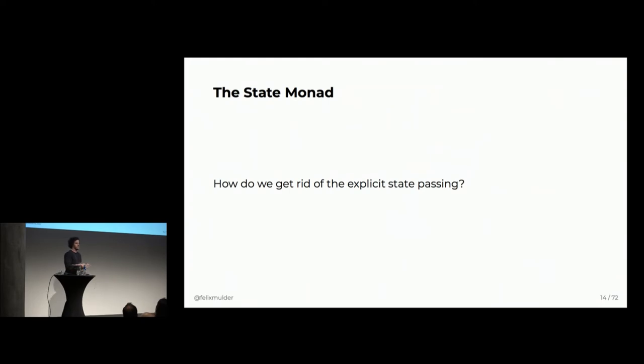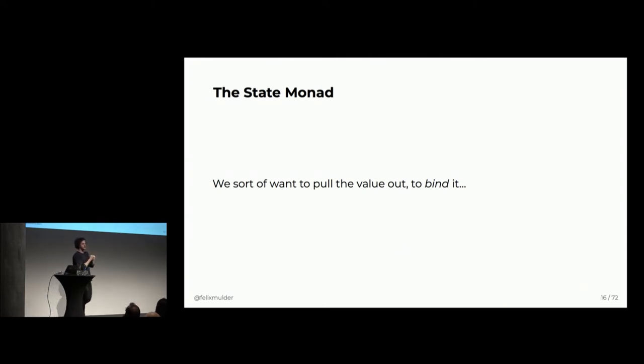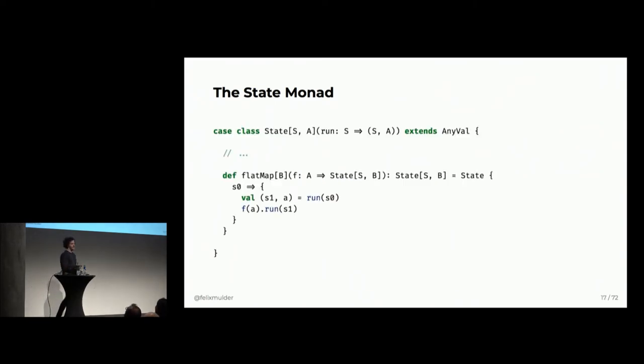So, we still haven't really gotten rid of the boilerplate of having to pass state explicitly. So, how do we do that? We need a way to reason about the value A in the state S and A without having to worry about the S itself. So, we want to pull out the value A and bind it. And everybody knows that bind is just another word for? Yes. The name of the conference, right? So, let's create flat map. Still in a naive way, I want to say. So, now we do pretty much exactly the same thing we did for map, except we are generating a new state with the F function. So, now we pass that, the value A, we get a new state and then we run it with S1. All right. Simple enough.